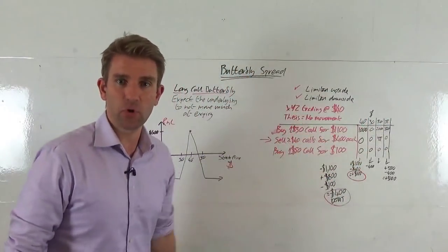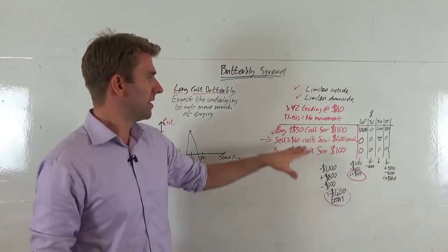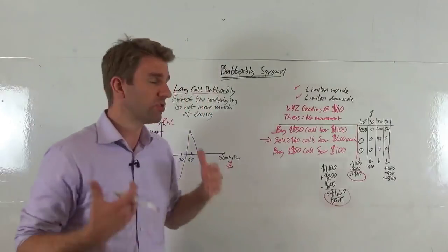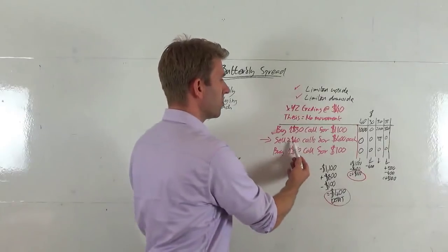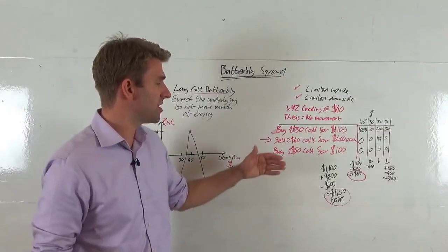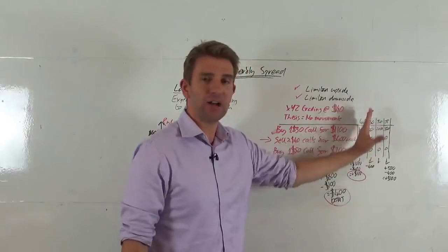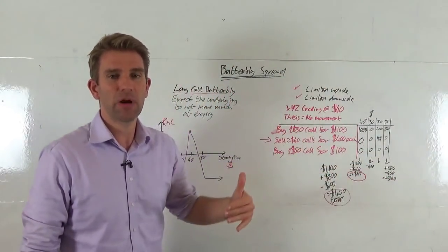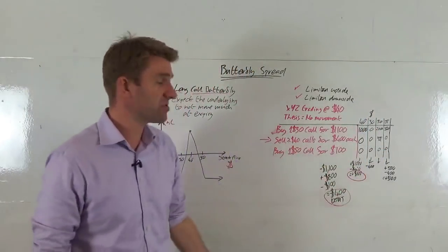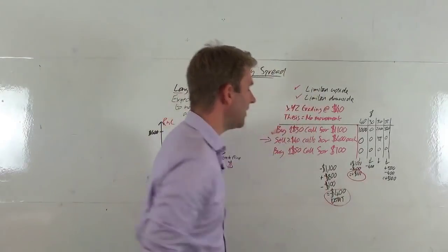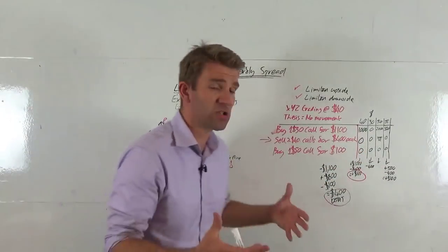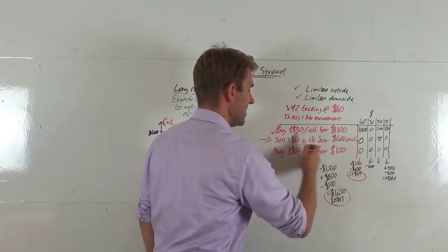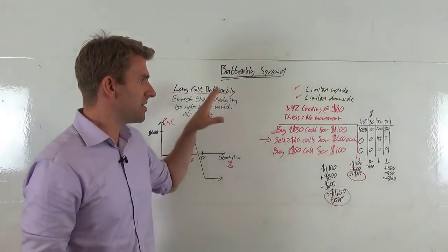Let's look at some scenarios. If XYZ expires at $40: the $30 call we bought has value — the right to buy at $30 something trading at $40, so it's worth $10 times 100 shares = $1,000. The $40 call is worthless because the right to buy at the current price is worth nothing. The $50 call is also worthless. So the total option value is $1,000. We paid $400 for the whole spread, so we net $600. That's the maximum profit — exactly what we wanted.